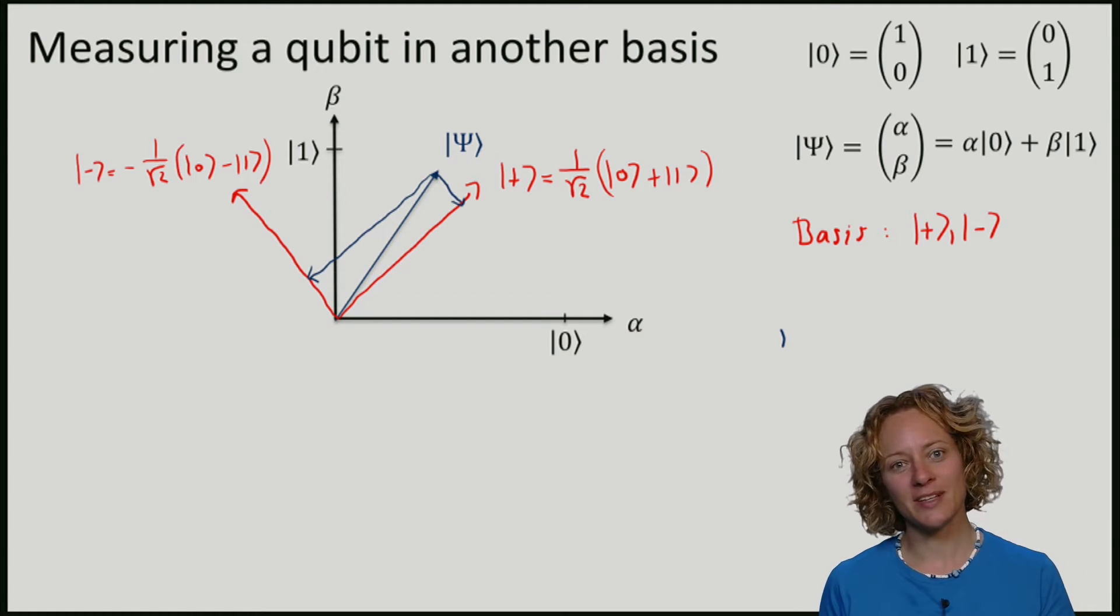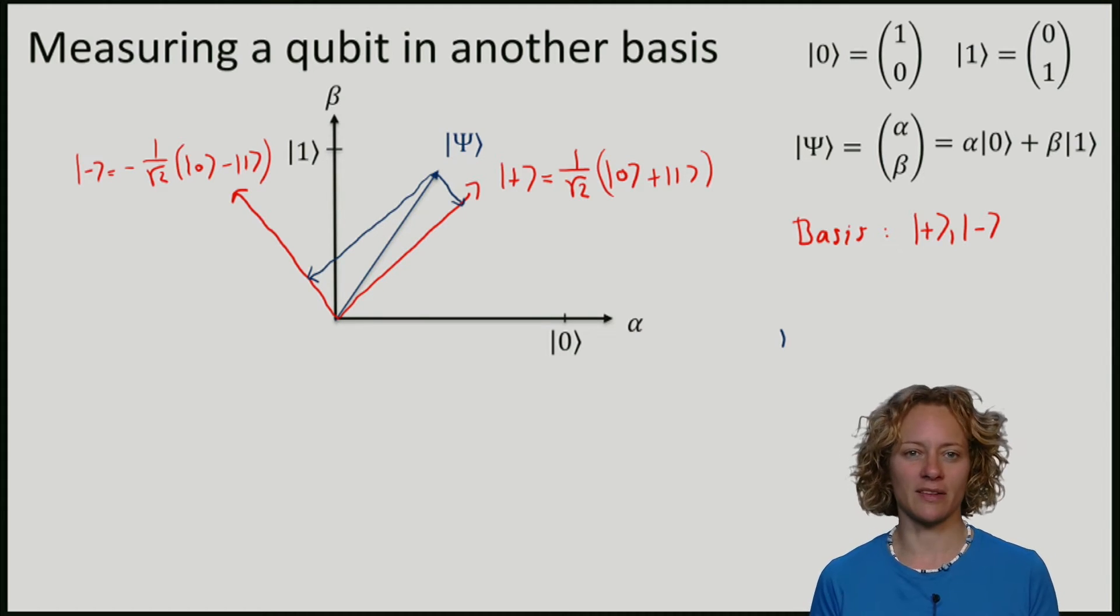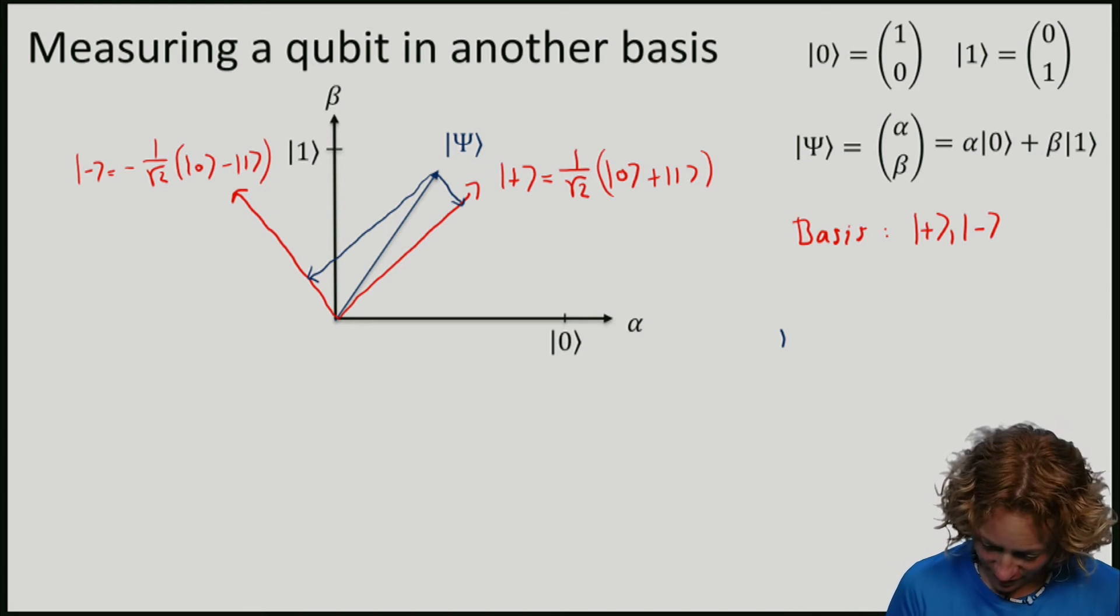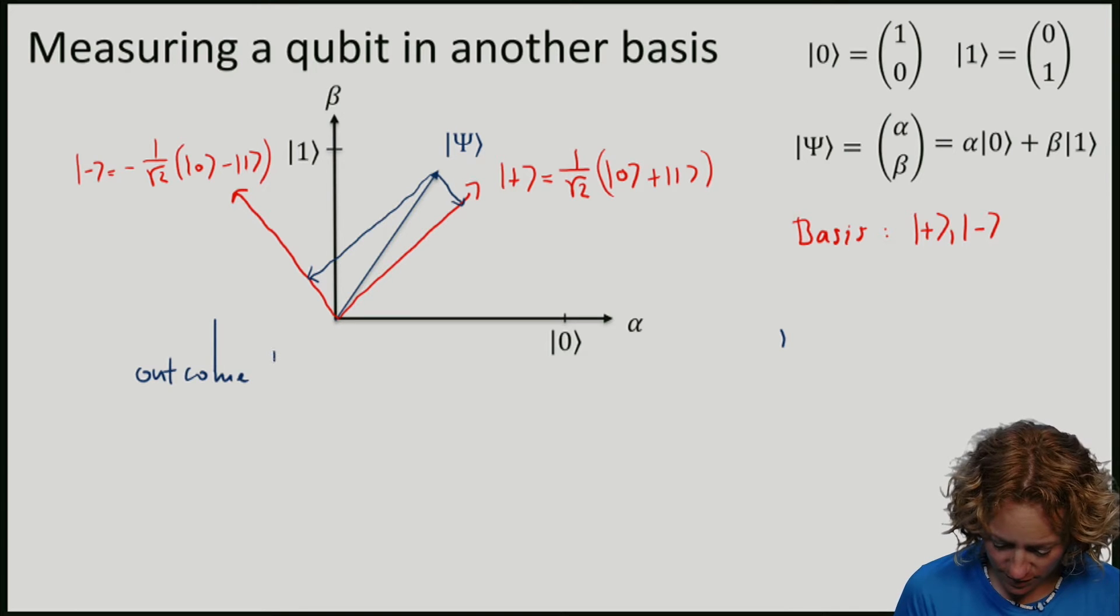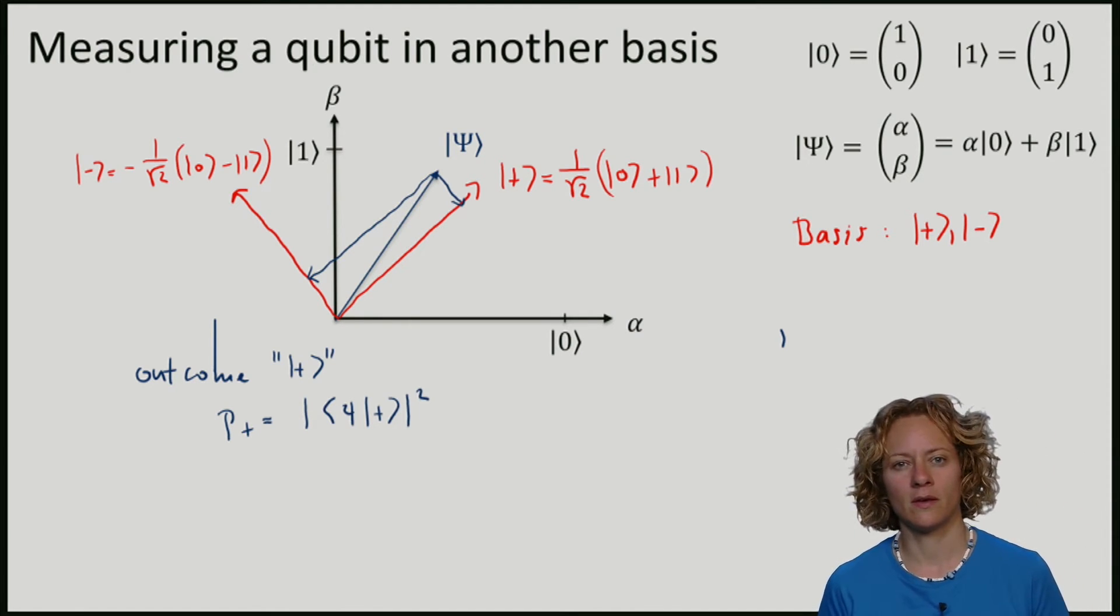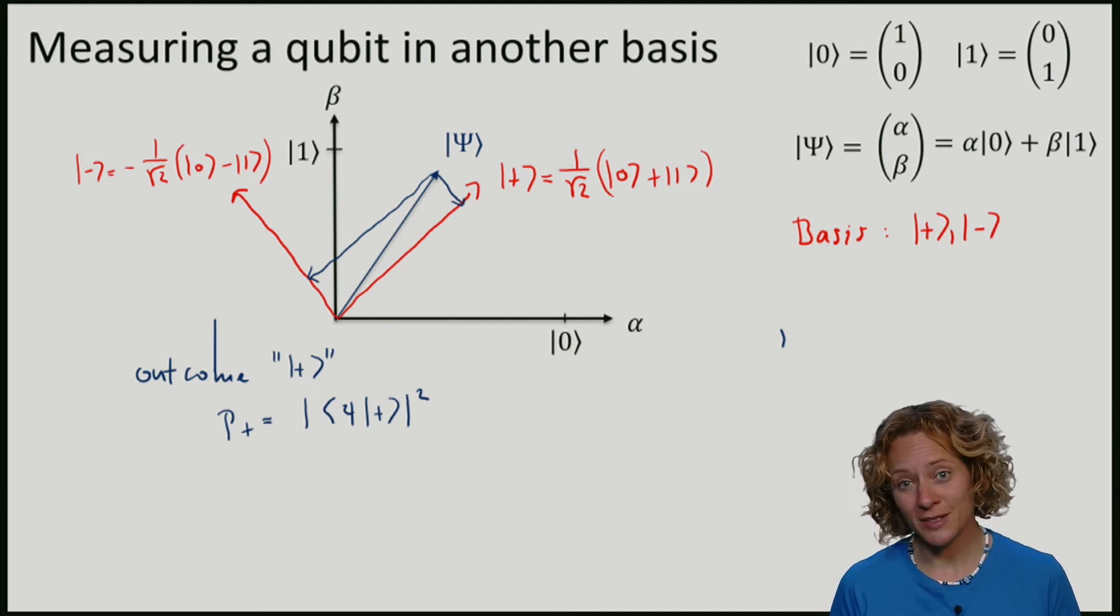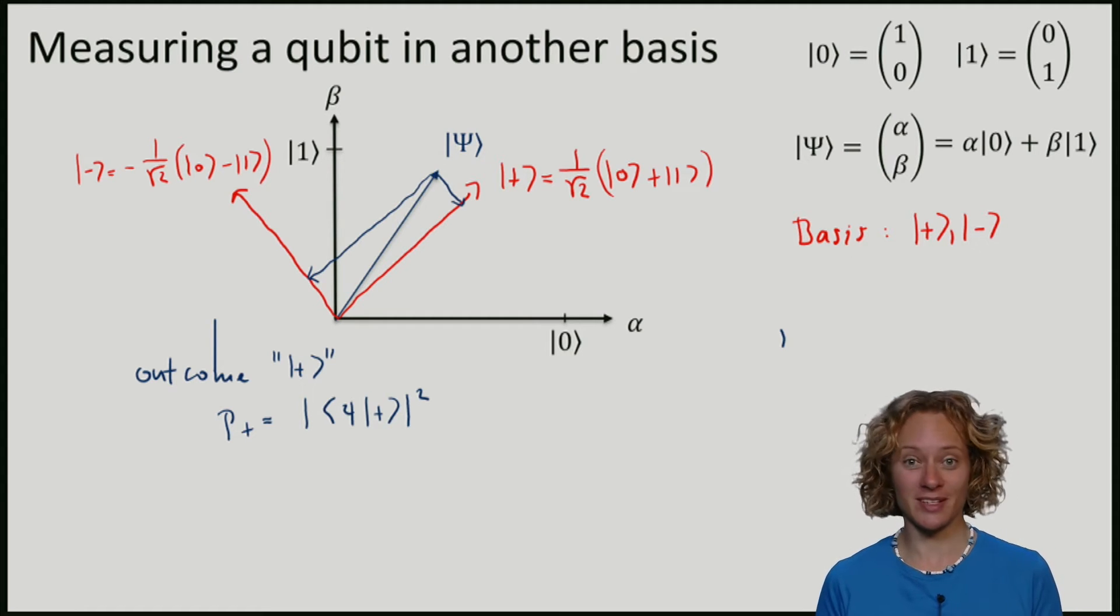Just as before, we basically want to compute the inner product between psi and plus to see how much plus is in the state. So the measurement outcomes, which I'll identify with the elements of the basis. So outcome plus has probability taking psi inner product with plus. And similarly, the probability of obtaining the outcome minus can be obtained by computing the inner product between psi and minus.